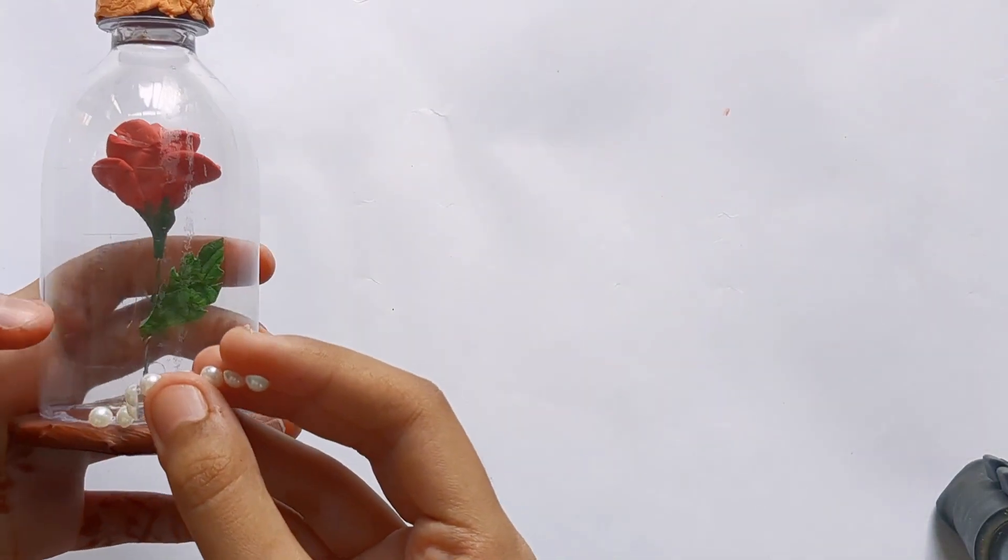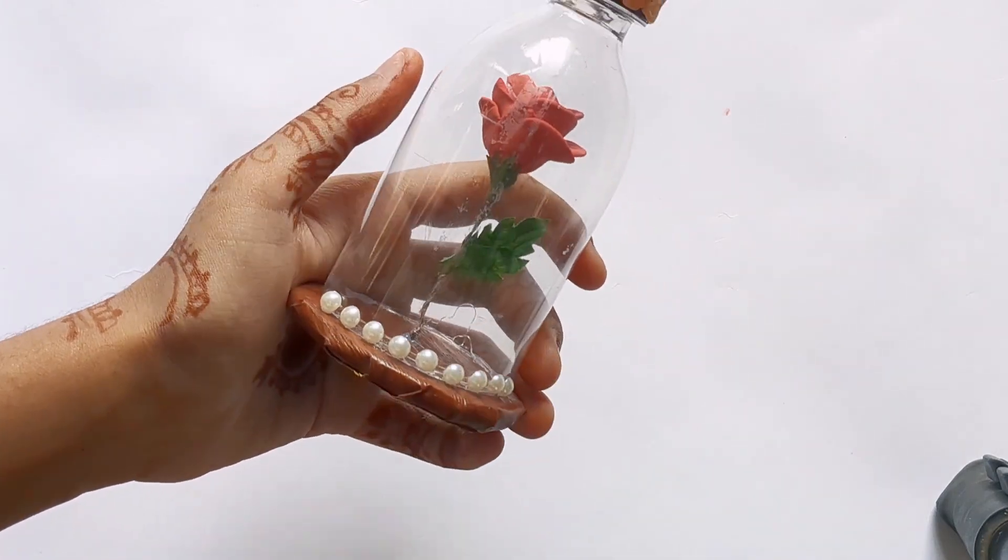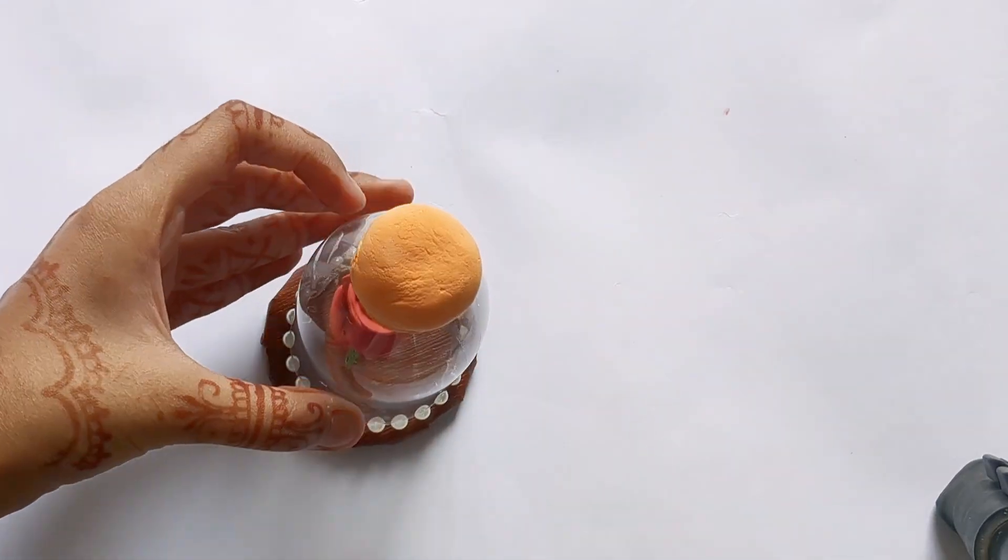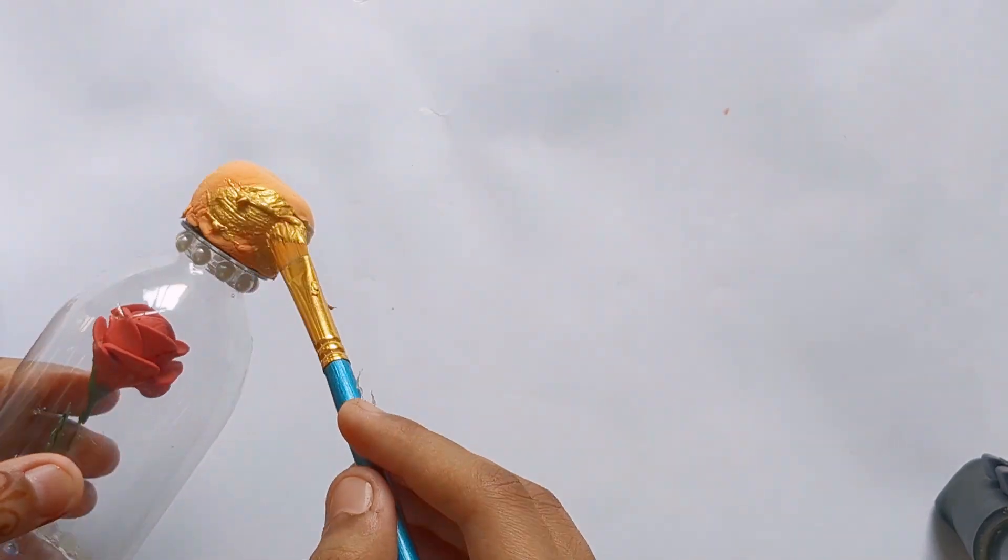Then I applied glue and covered it with a pearl finish. I painted the rose, and since I didn't keep the orange color, I painted it with golden acrylic color.